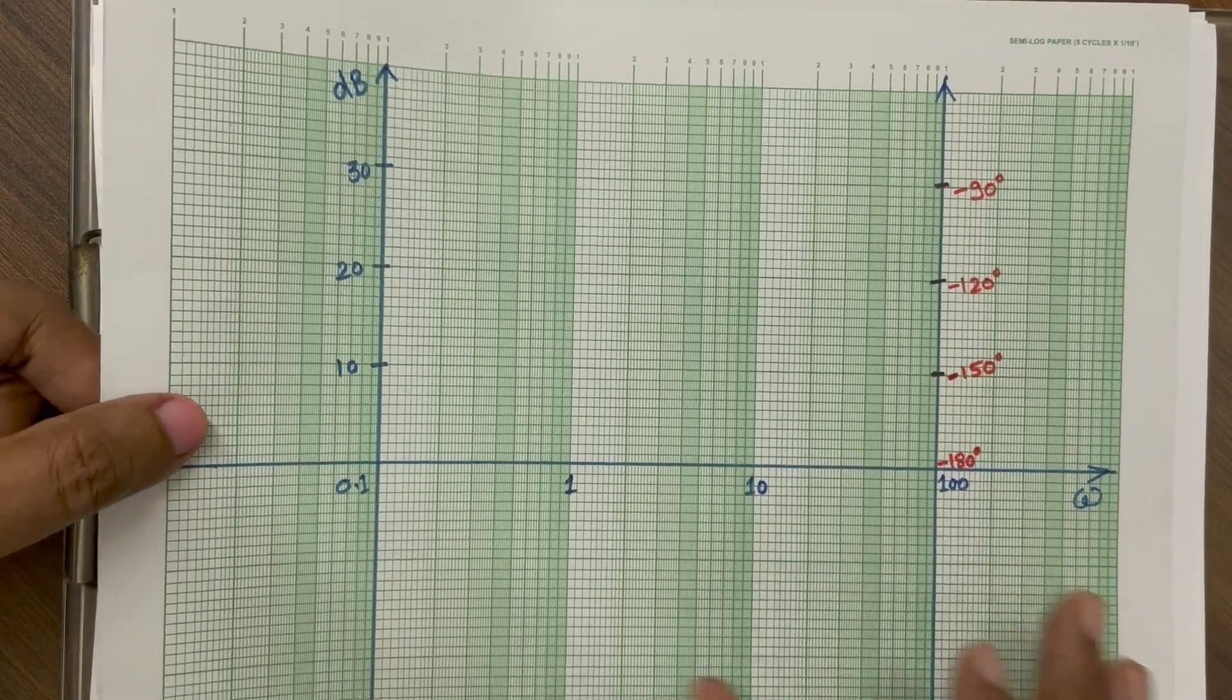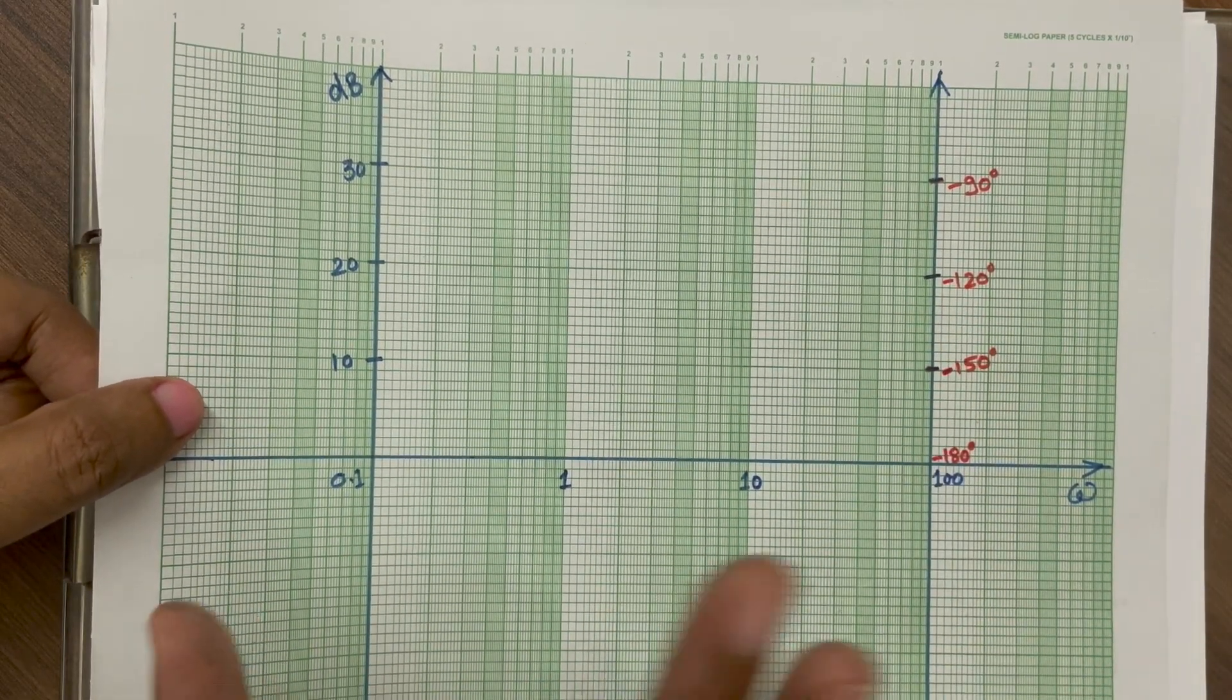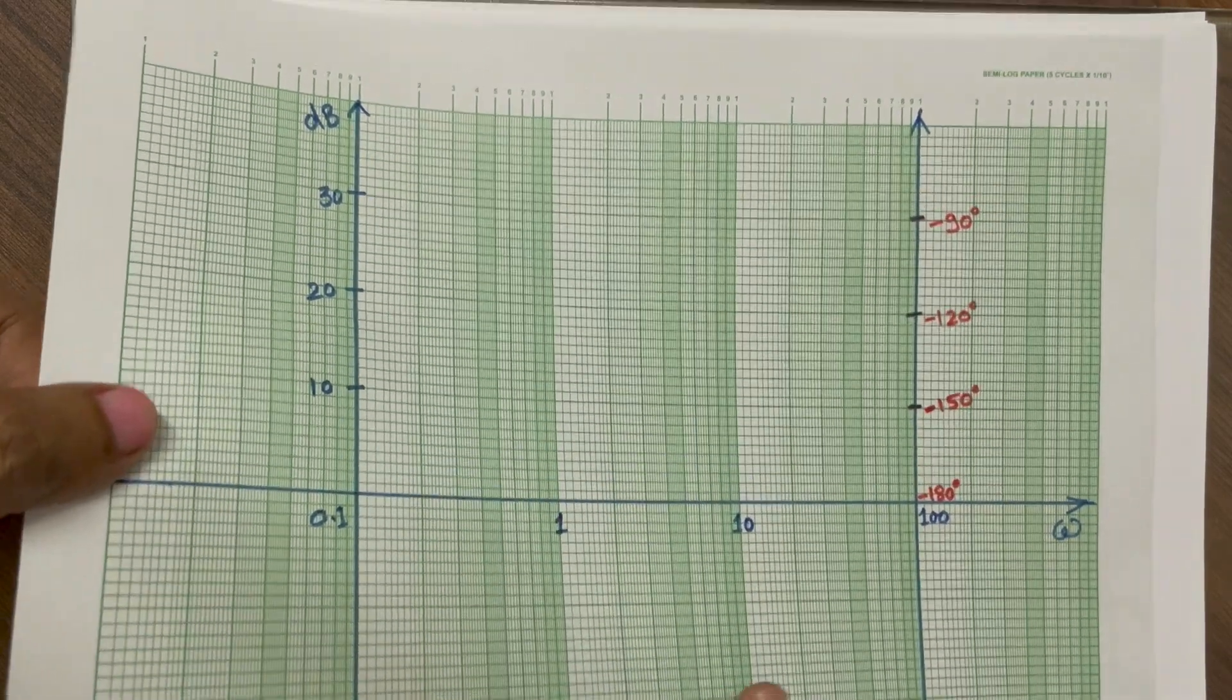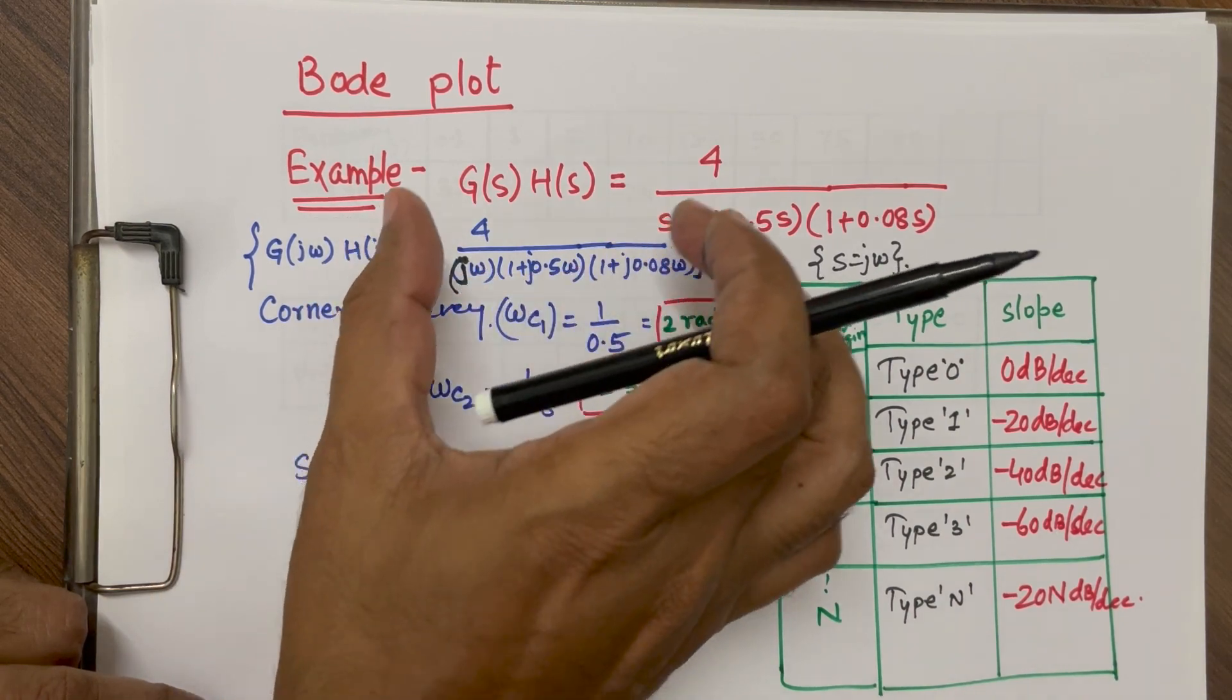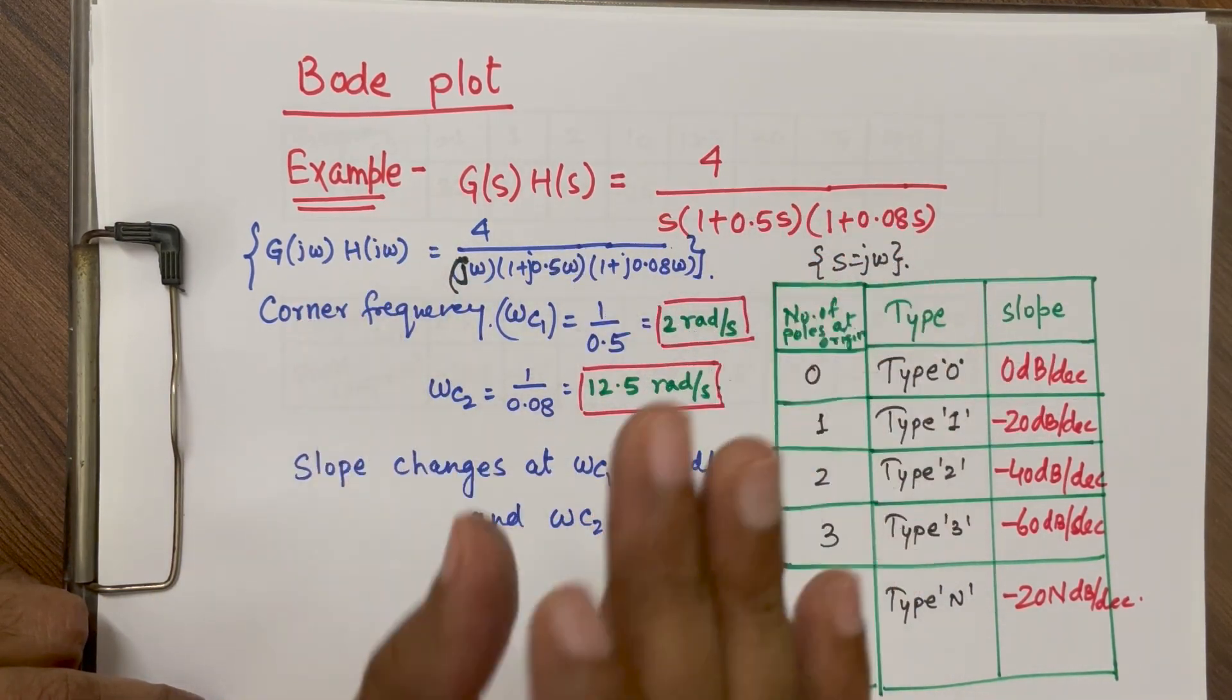So basically this is semi-log graph. I will discuss about its axis and all. Before that, we will just take one example and then we try to understand.